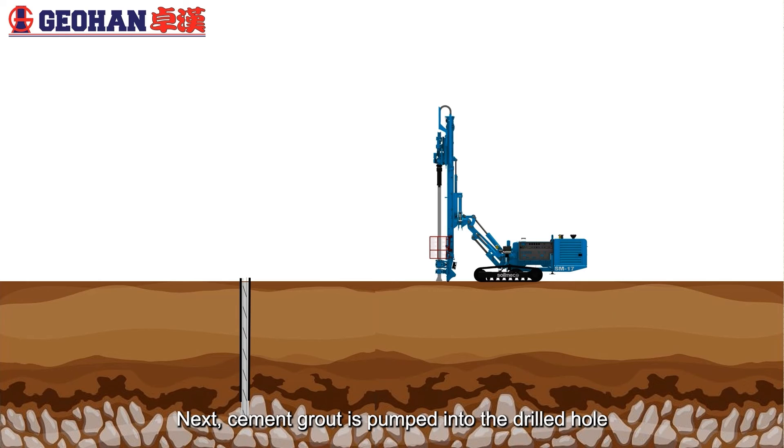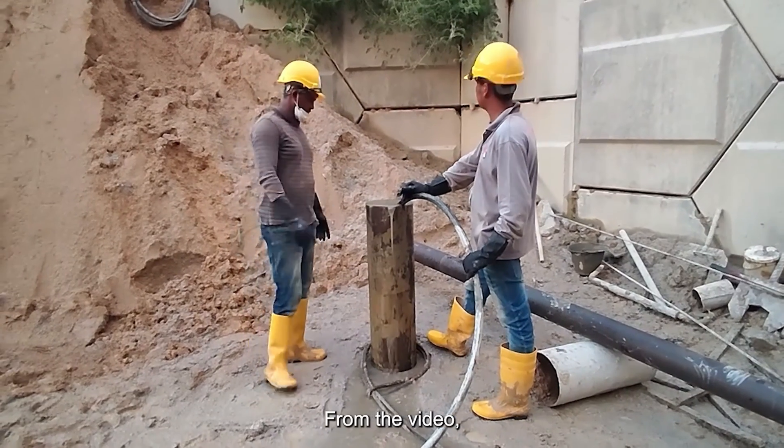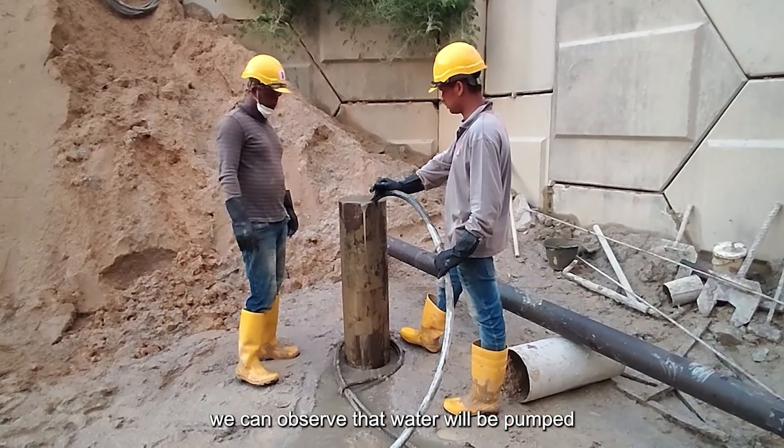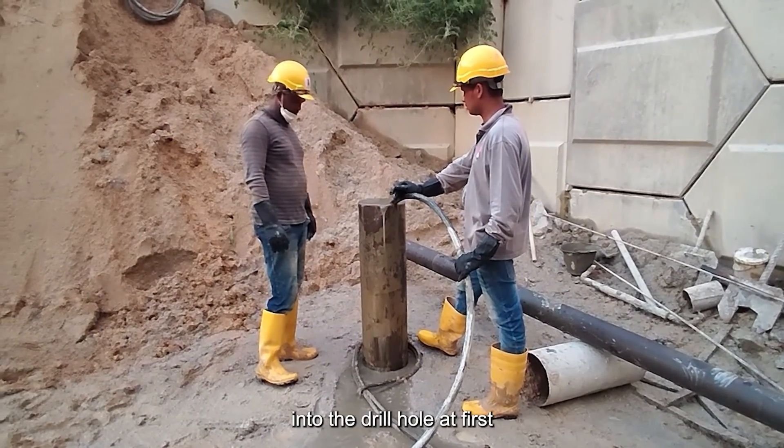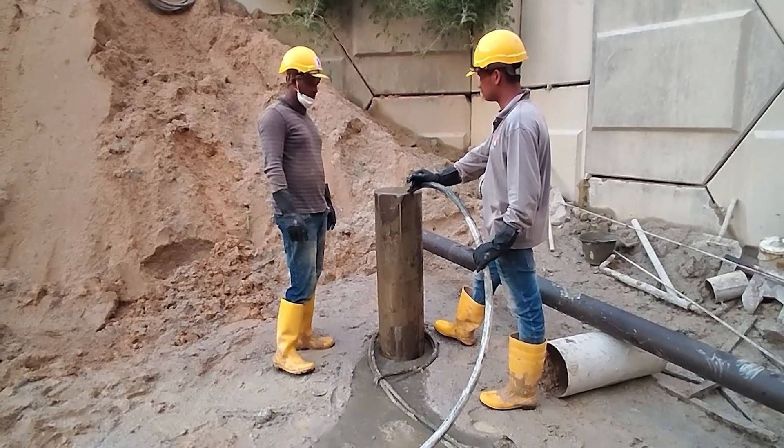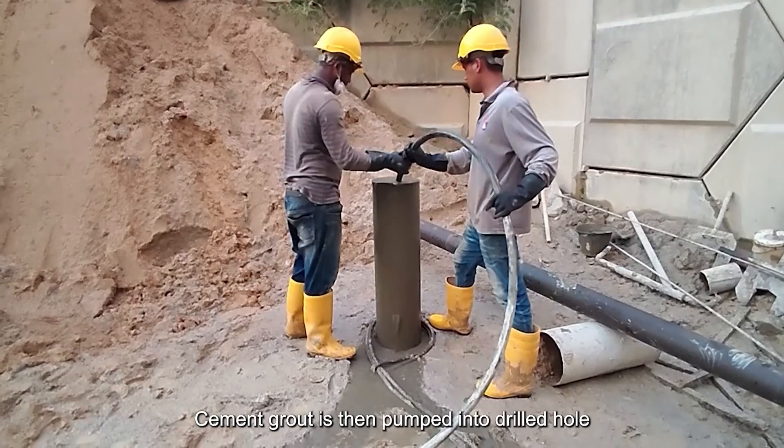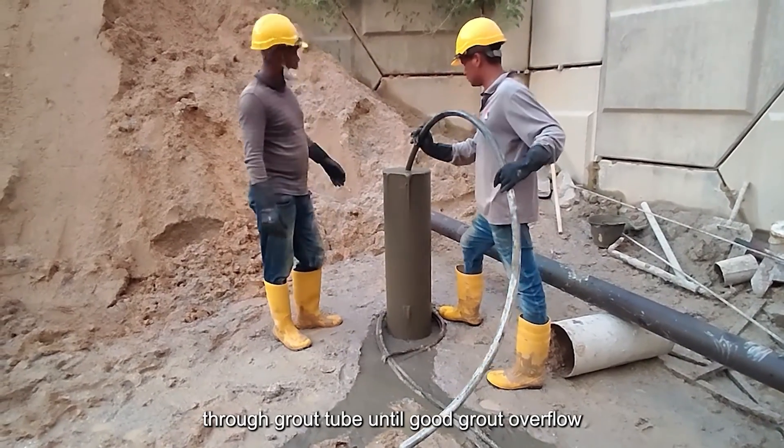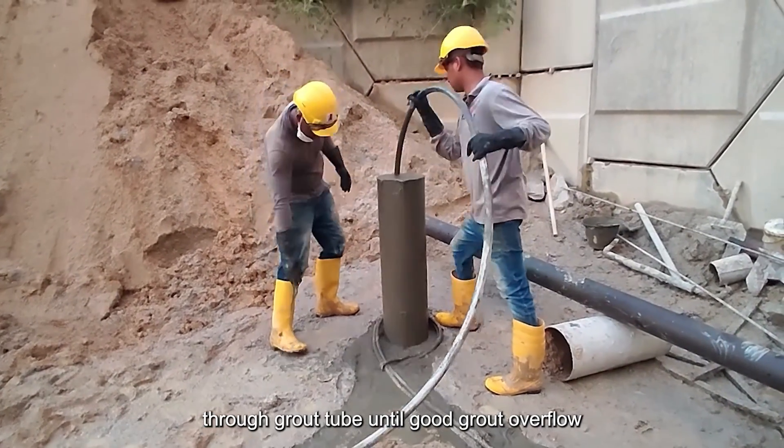Next, cement grout is pumped into the drill hole. Some portion of cement grout is collected for test-cube. From the video, we can observe that water will be pumped into the drill hole at first to flush out the sediment. Cement grout is then pumped into drill hole through the grout tube until good grout overflow.